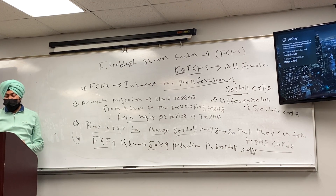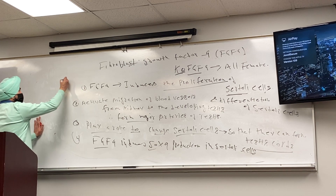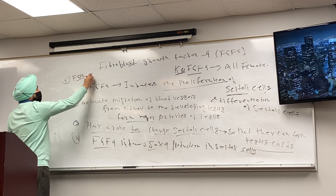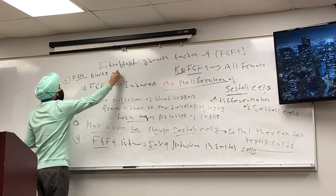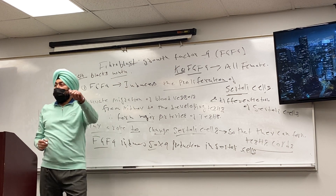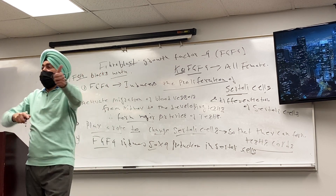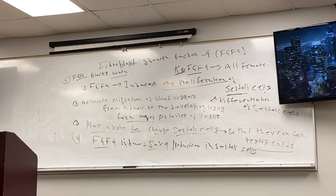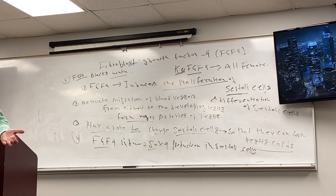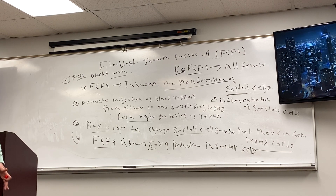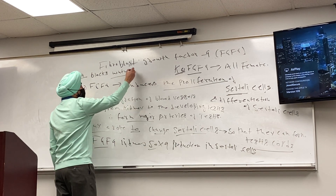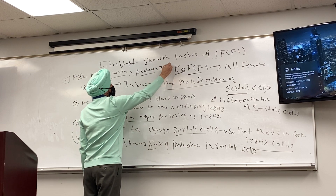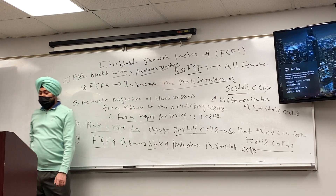Number 5 — FGF9 blocks Wnt4. Remember, Wnt4 and R-spondin together were making beta-catenin. So far we are saying beta-catenin is blocked, and this is how it is blocked. Because Wnt4 is not there, R-spondin 1 cannot do anything on its own. Therefore beta-catenin is blocked — the beta-catenin path is blocked.